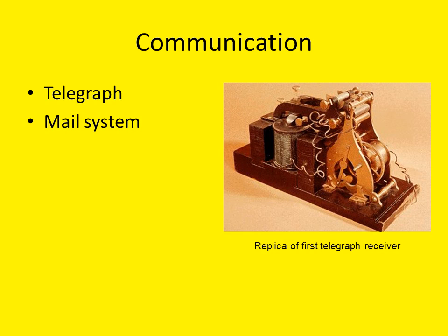Invented by scientist Samuel F.B. Morse, the electromagnetic telegraph transmitted electronic signals across copper wire. In less than a decade, telegraph lines connected the larger East Coast cities. By 1854, 23,000 miles of telegraph lines connected various parts of the country. The first transatlantic telegraph cable was laid in 1858, enabling rapid communication between Europe and the United States. The U.S. Postal Service also made increasing use of new technologies, such as the steamboat and the railroad, to greatly reduce delivery time between major U.S. cities.